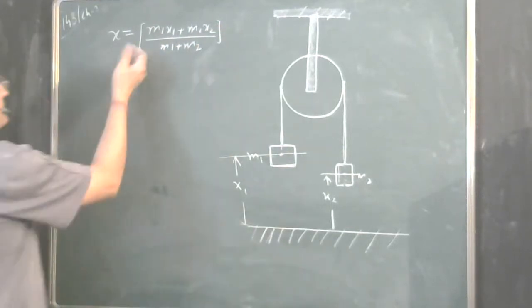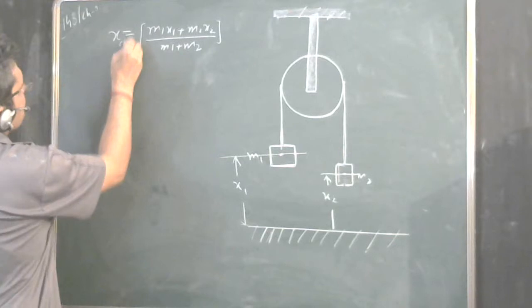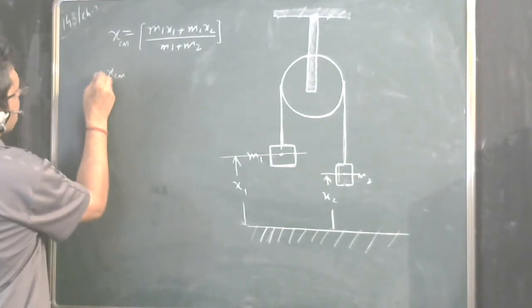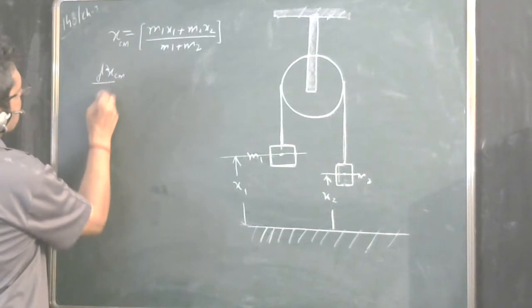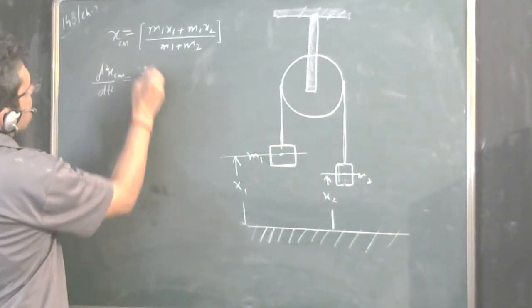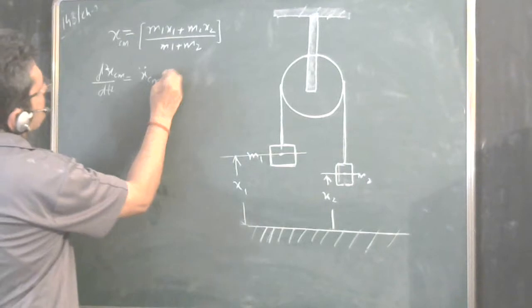What is the acceleration of the center of mass? Double differentiate it. X center of mass double differentiate d square upon dt square.